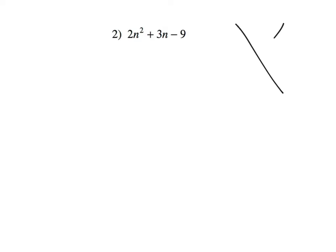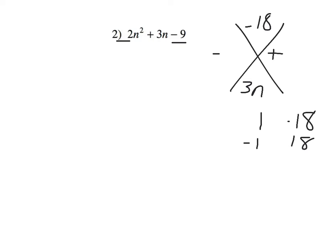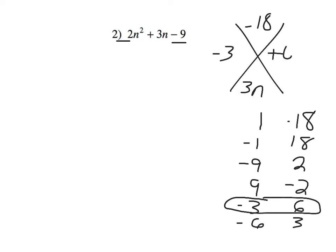Example two. Once again, I'm doing the first term times the constant, so I have negative eighteen. If I'm going to multiply to a negative, I need a negative and a positive. And I need to add to the middle term, which is 3n. So, you could have one and negative eighteen, negative one and positive eighteen, negative nine and two, nine and negative two, negative three and six, negative six and three. Which of those give you a positive three when you combine them? Negative three and positive six.